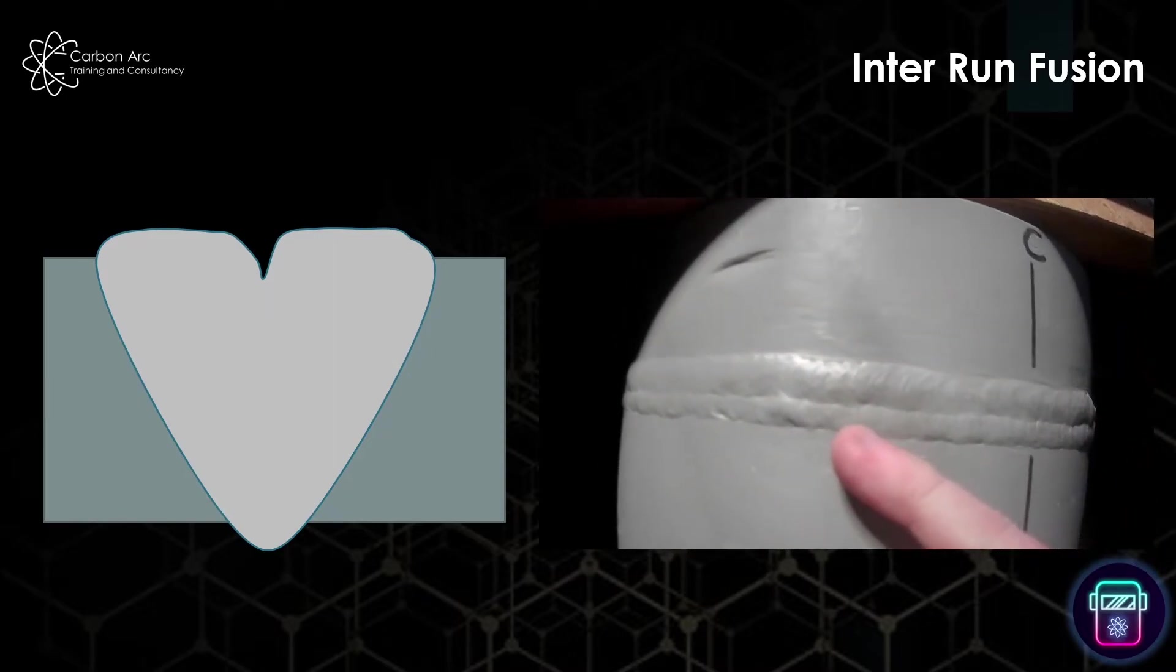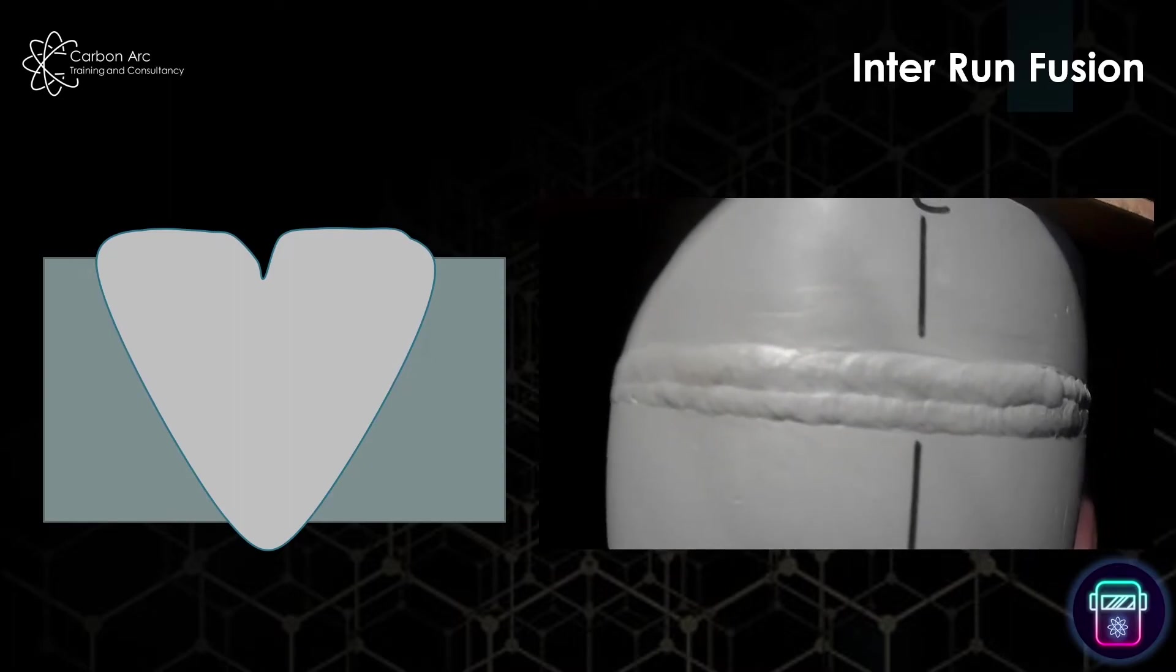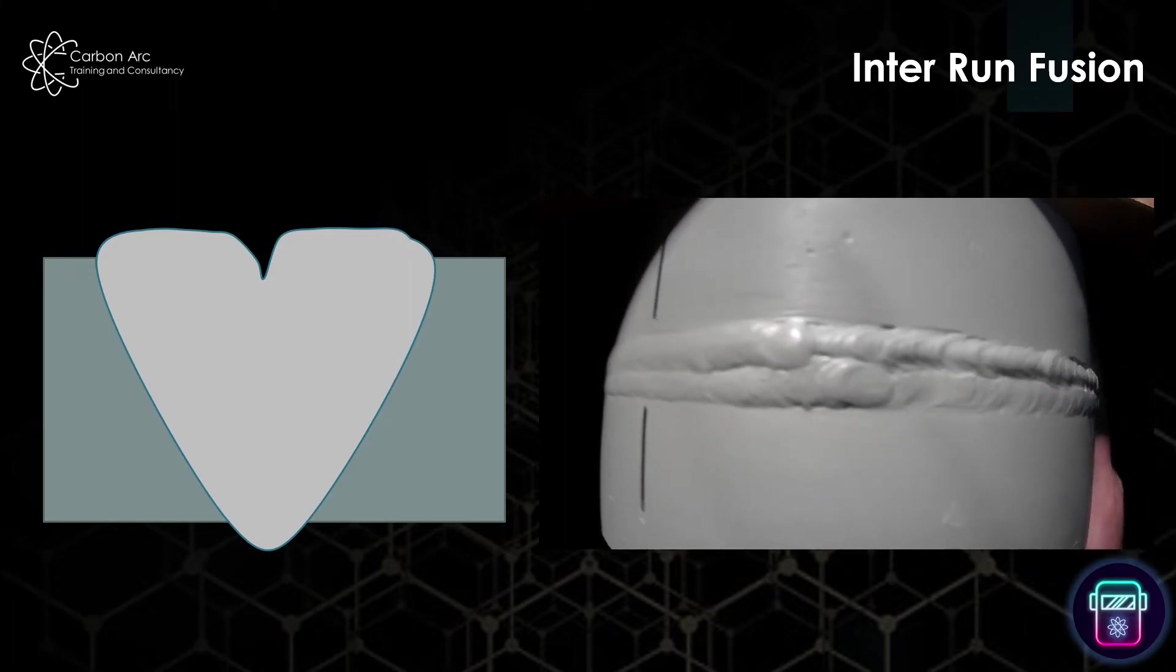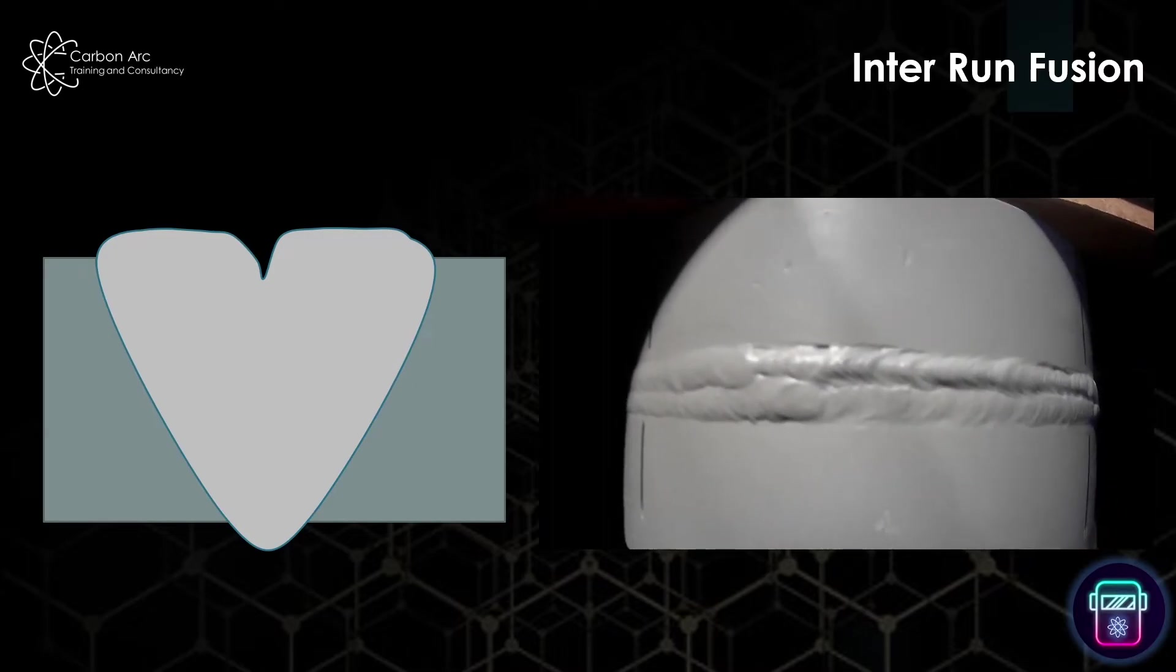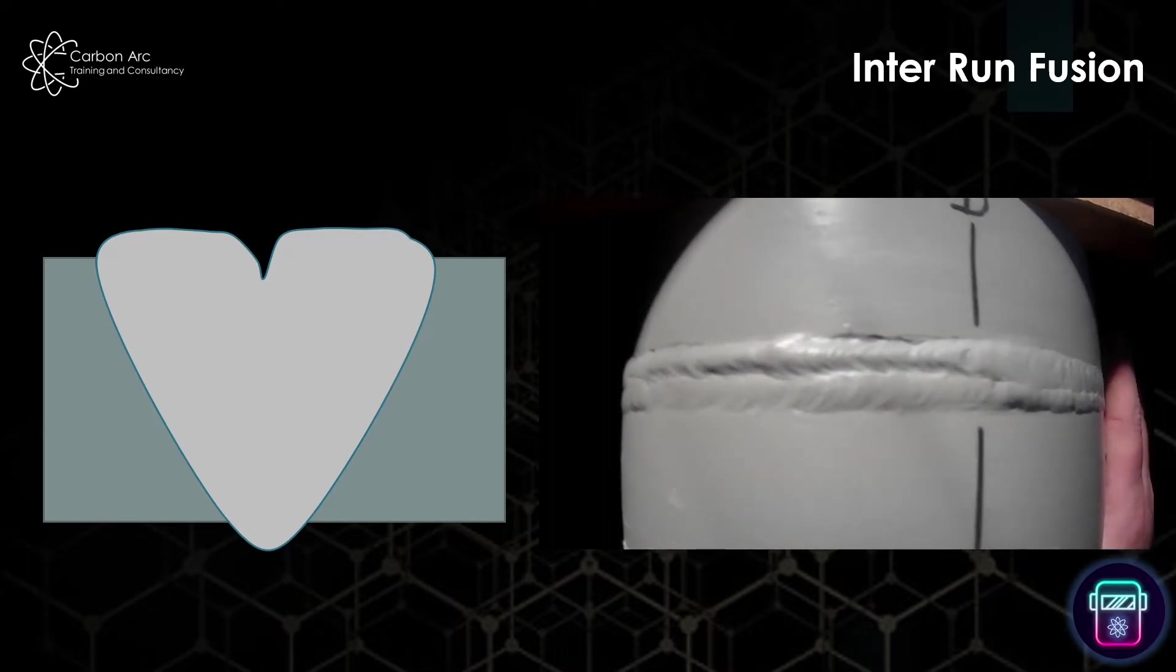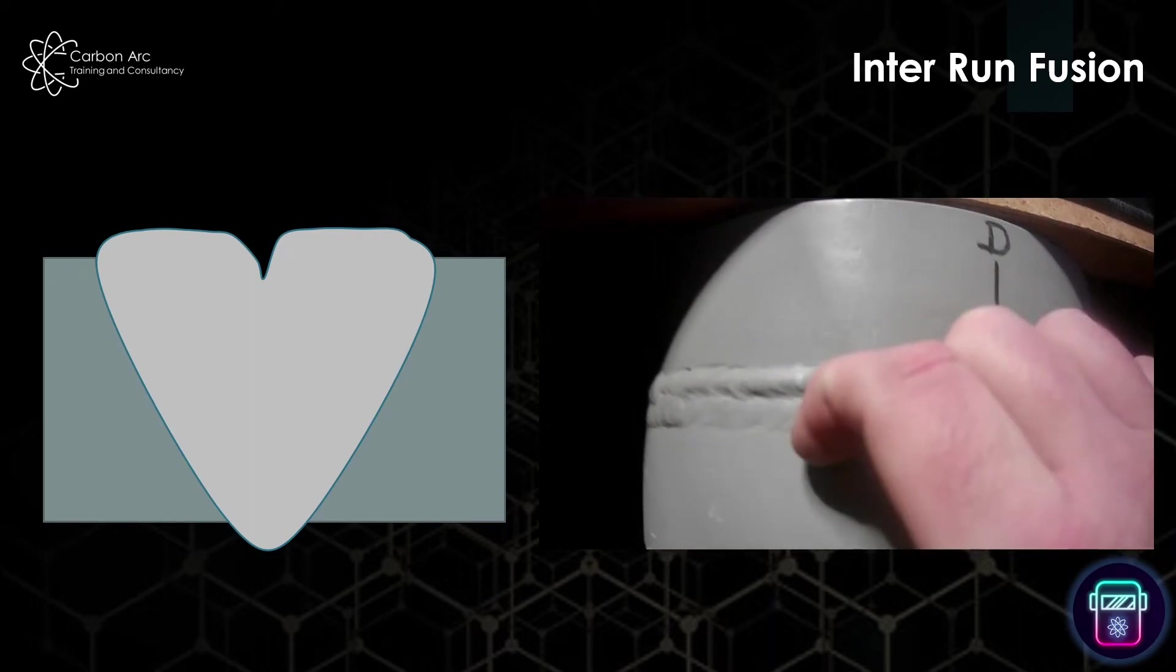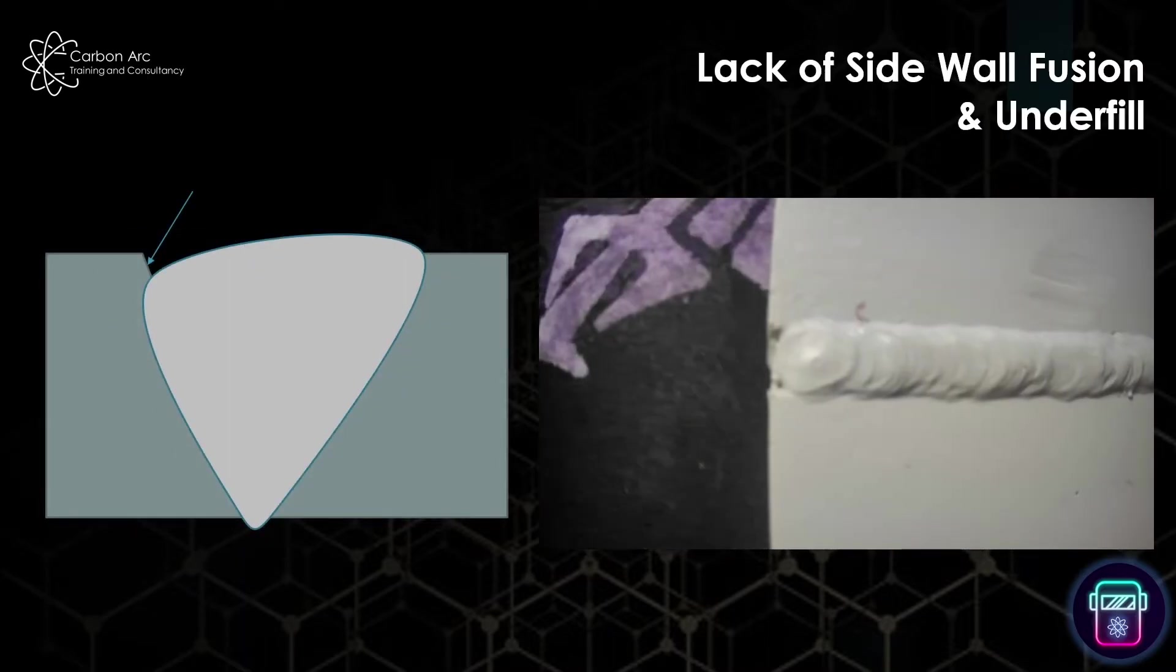They're not very big but they are sharp. On this sample they're quite small, but we're looking to see if we've got a nice smooth blend between the runs. Here we can see an area which the top weld starts to become a bit ropey. We've potentially got a non-smooth transition between the two runs.